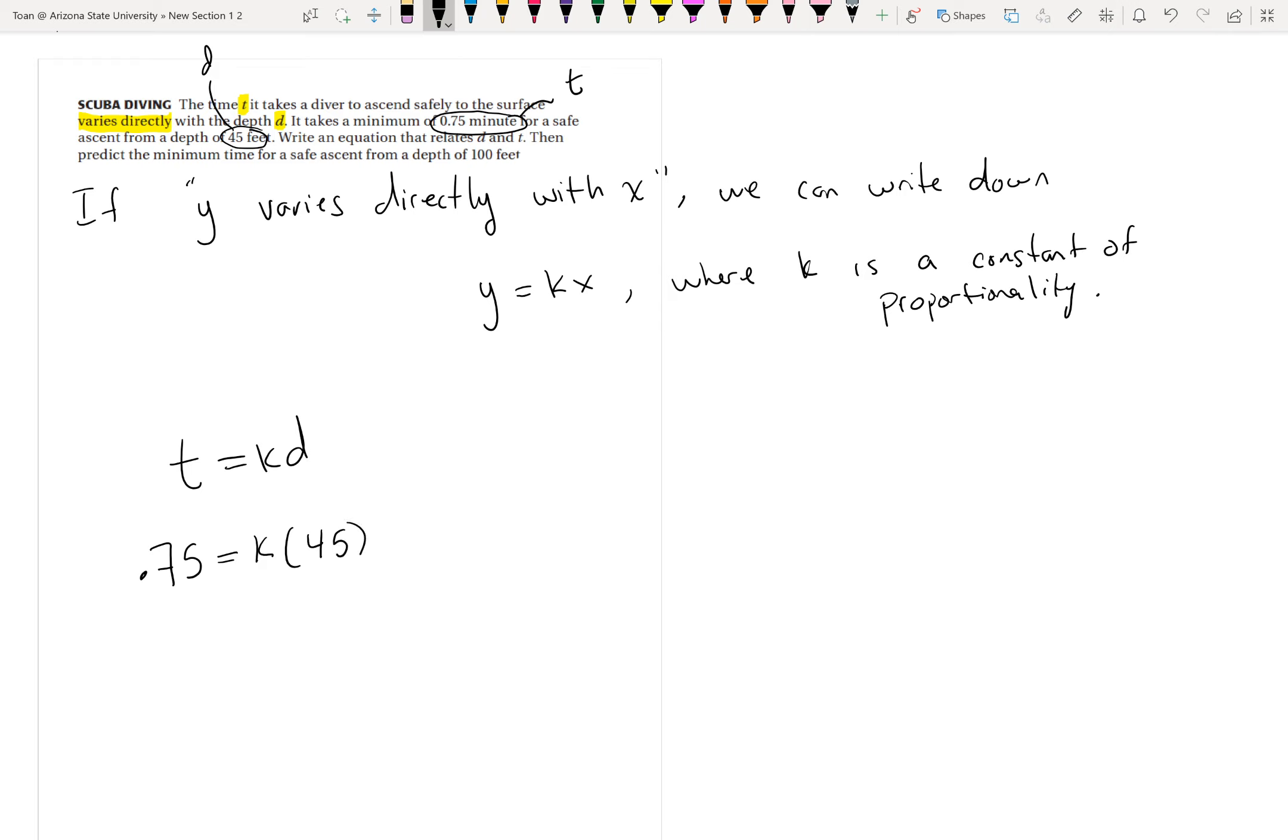Now it gives you an equation to solve for k. Let me go ahead and grab a calculator. So in this case here, to solve for k, we're going to divide out the 45. So that gives us 0.75 divided by 45. K, and I convert it to a fraction, k is about 1 over 60. Or it's not about, it is.